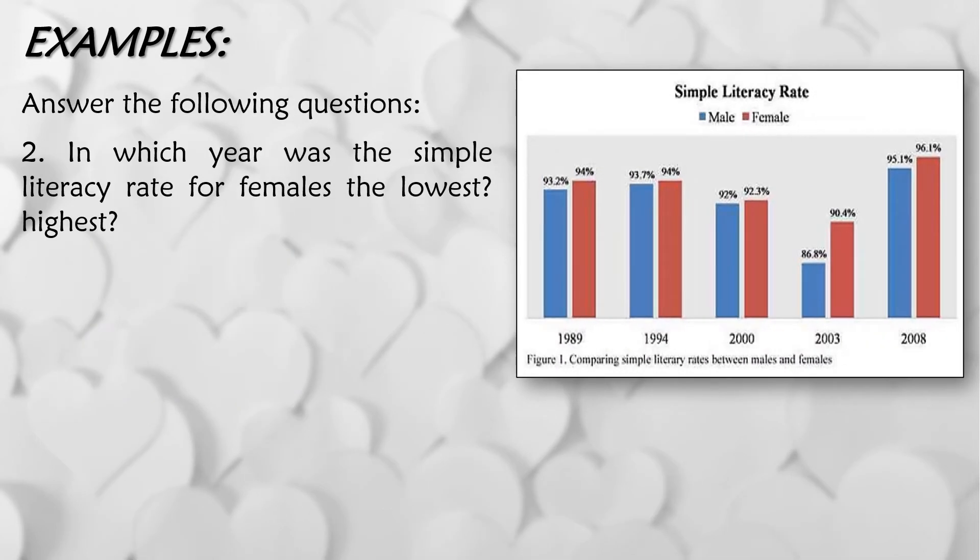Second question, in which year was the simple literacy rate for females the lowest and the highest? So sa female daw, since meron tayong legend, so ang pula ay para sa female. So anong taon daw yung may pinakamababa at pinakamataas? So the lowest is 2003, ito yun, na meron lamang 90.4%.